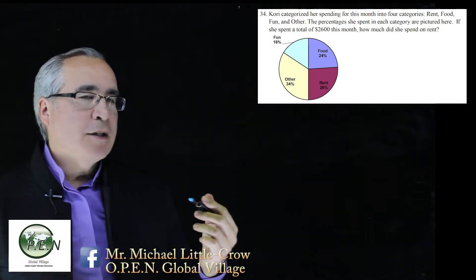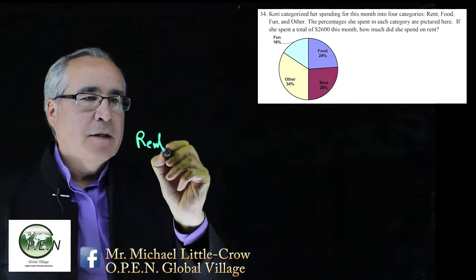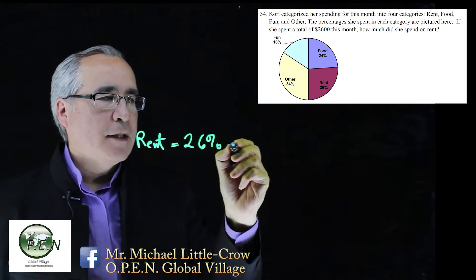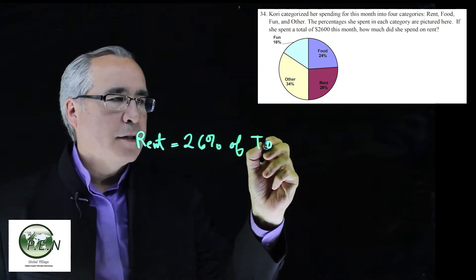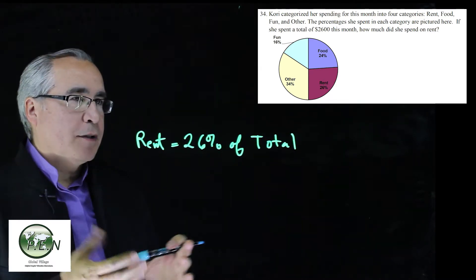And what we want to know is what did she spend on rent. We know that for rent, she spent 26% of the total. That's right in the chart itself.